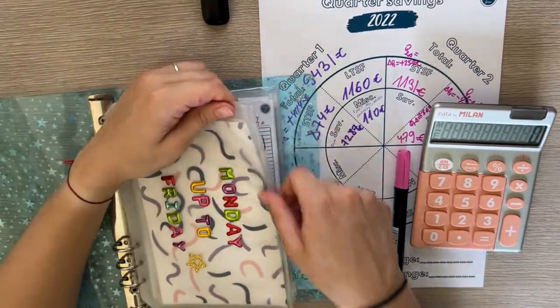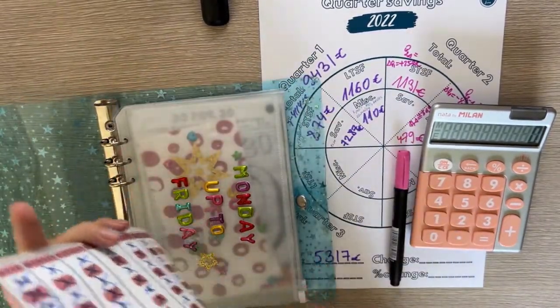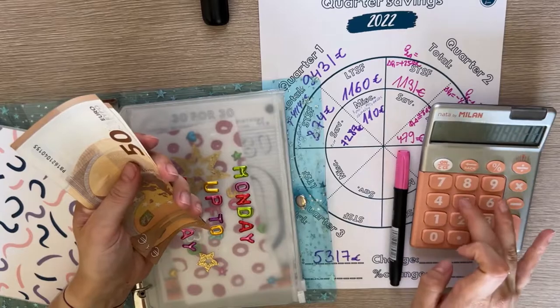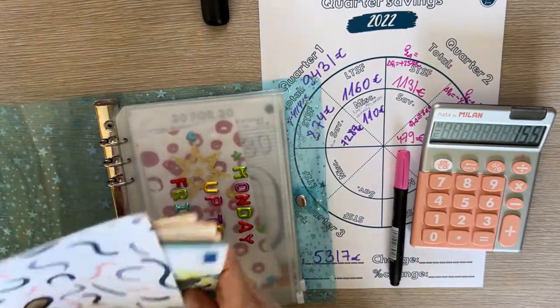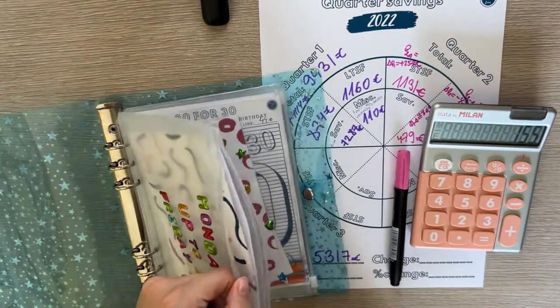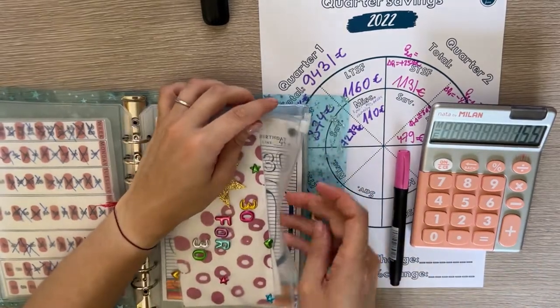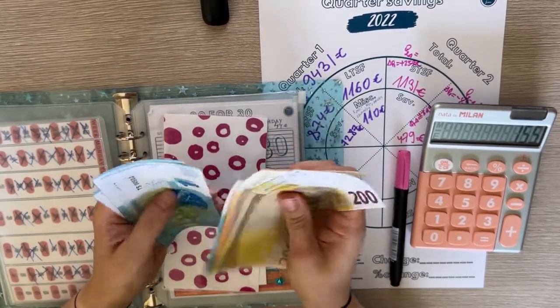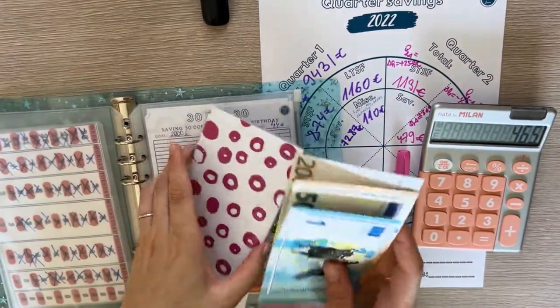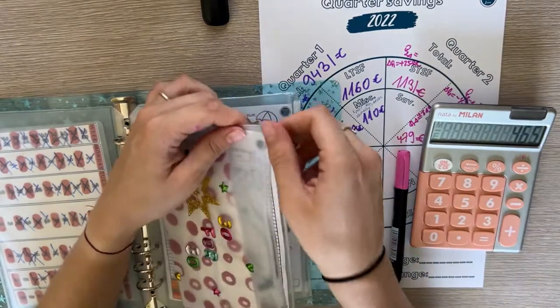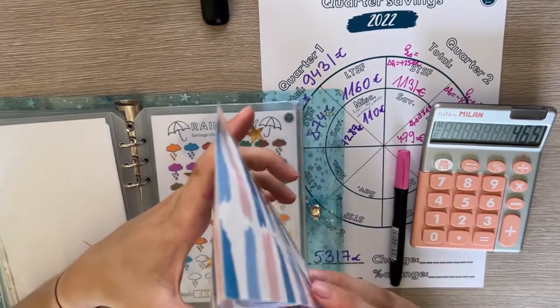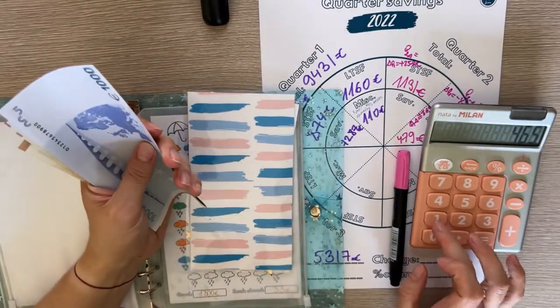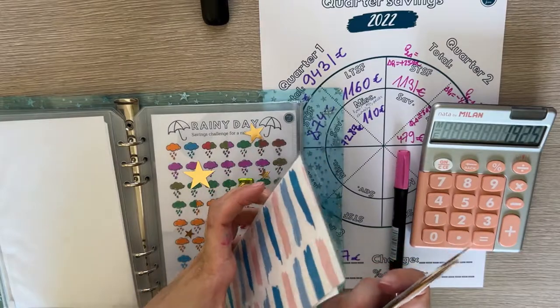Last is savings, and it has four categories. First is Monday up to Friday, and it has 155. Next is 34-30 and here we have 310. Then is rainy day which is my emergency fund, we have 1,460, plus what we have in world trip.